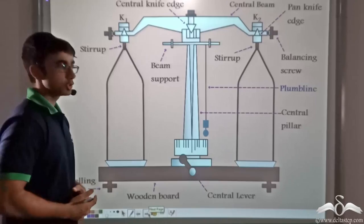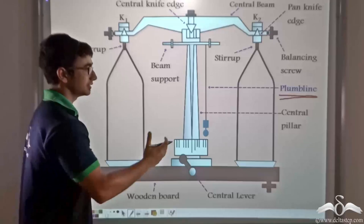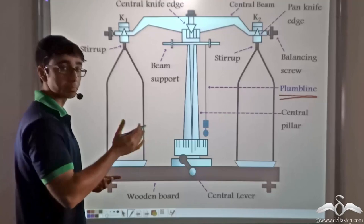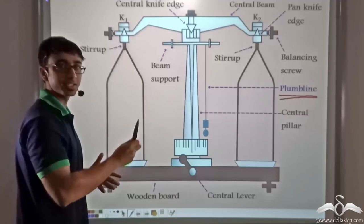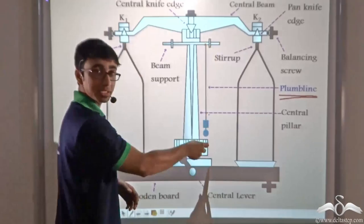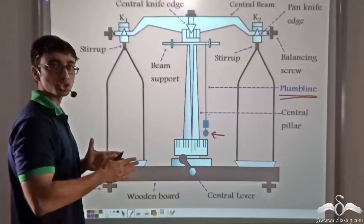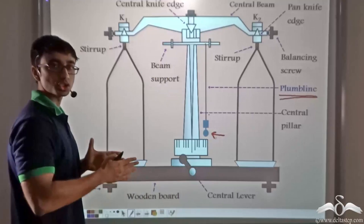Moving on, we have what is known as the plumb line. The plumb line ensures that the entire setup of the physical balance is perfectly vertical, or in other words, balanced in the horizontal plane. When the plumb line, which is suspended from the beam support and has a small weight at its end, is not moving and is perfectly vertical, it implies that the entire arrangement is also vertical and balanced.